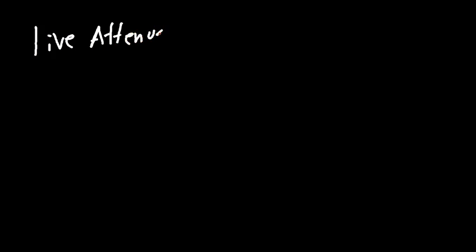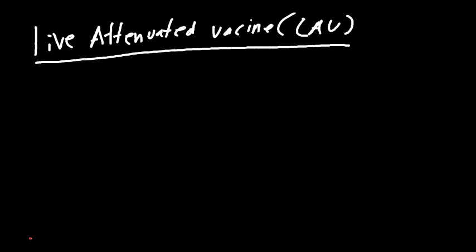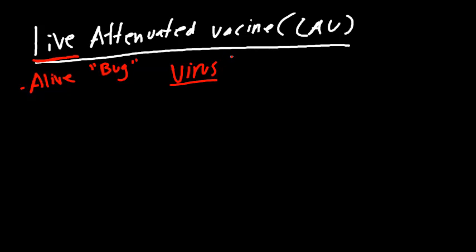So let's first talk about the live attenuated vaccine, also known as LAV for short. Through the word 'live,' we're going to have an alive bug. This bug could be any microbe such as a virus or a bacteria. However, for live attenuated vaccines, it's going to be easiest with viruses. So when you think live attenuated vaccine, think virus — there are bacterial live attenuated vaccines, but it's mostly going to be viruses.